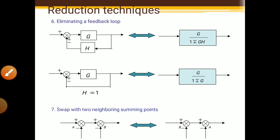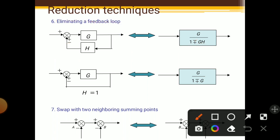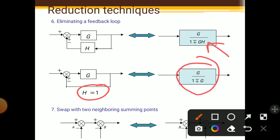One more formula: if the value of H is equal to 1, then we put H equal to 1 in the formula and get G upon 1 plus or minus G. This is called a unity feedback loop, because the value of H is equal to 1.